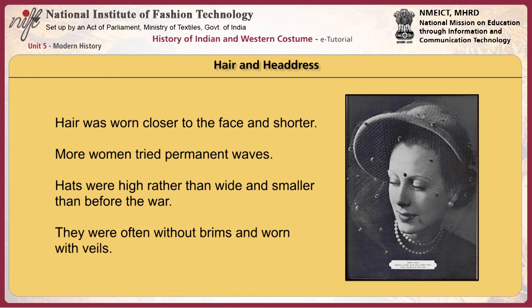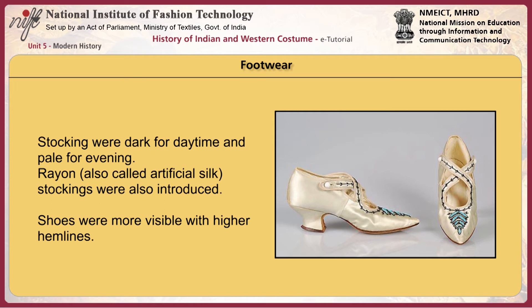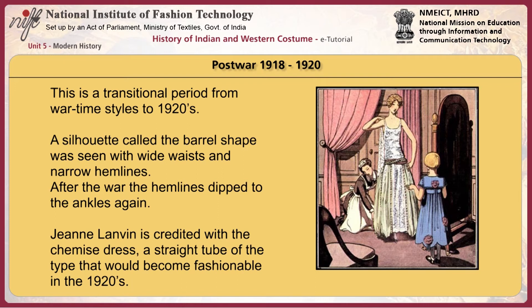Hair was worn closer to the face and shorter, and more women tried permanent waves. Hats were high rather than wide, smaller than before the war, often without brims and worn with veils. For footwear, stockings were dark for daytime and pale for evening. Rayon, also called artificial silk, stockings were introduced. Shoes were more visible with higher hemlines. After the First World War, there was a transitional period from wartime styles to the 1920s. A silhouette called the barrel shape was seen with a wide waist and narrow hemlines. After the war, hemlines dipped to ankles again. Jeanne Lavon is credited with the chemise dress, a straight tube of the type that would become fashionable in the 1920s.